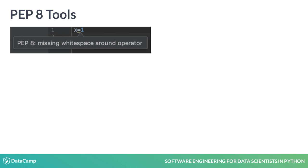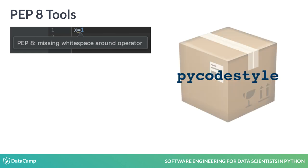One in particular that you'll be exposed to in this course is the PyCodeStyle package. PyCodeStyle can check code in multiple files at once, and it outputs descriptions of the violations along with information to let you know exactly where you need to go to fix the issue.